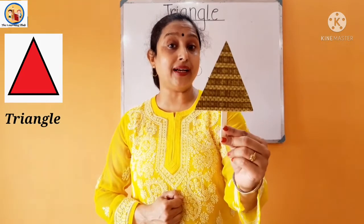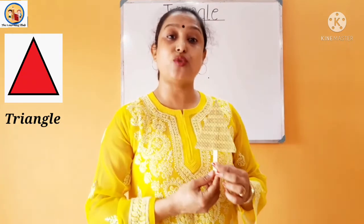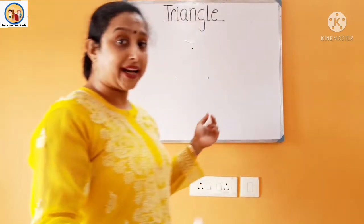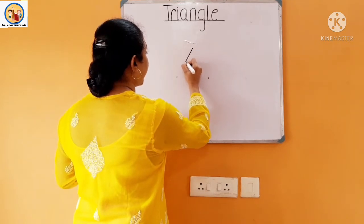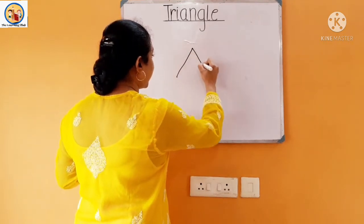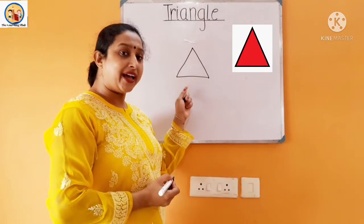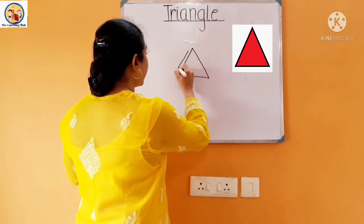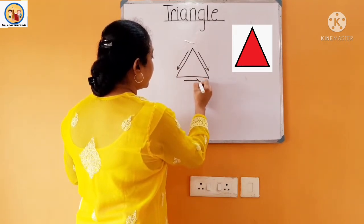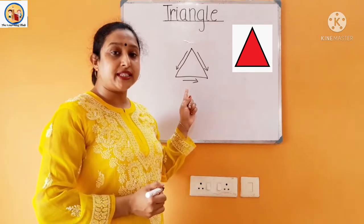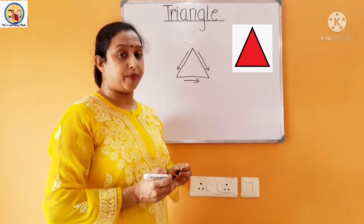Now we are going to learn how to draw a triangle, so everyone look at the board. One slanting line, then another slanting line, then a sleeping line — this is a triangle! One slanting line, then a slanting line, then a sleeping line. Which shape is this? Triangle. This is how we draw a triangle shape.